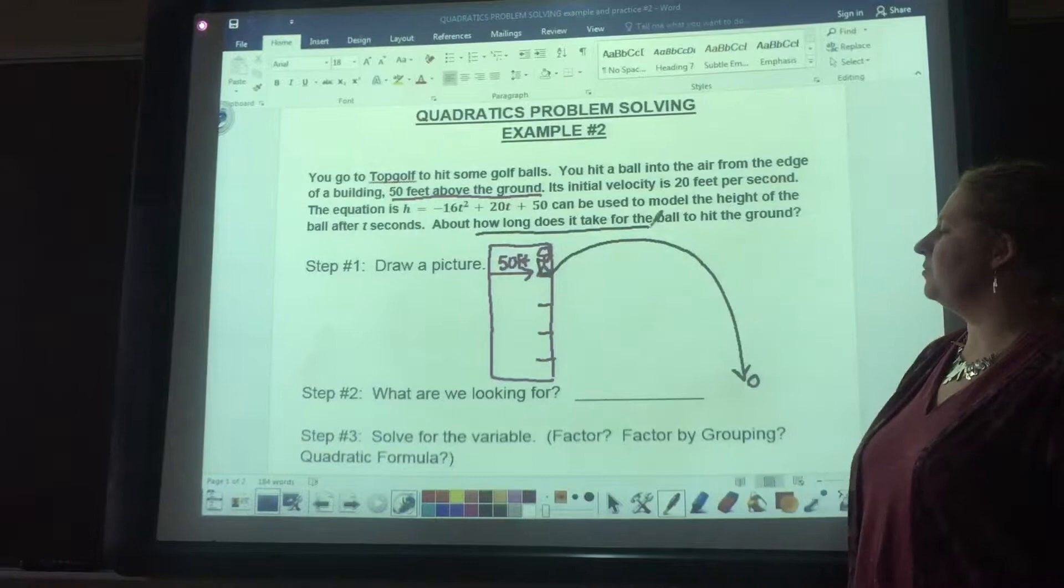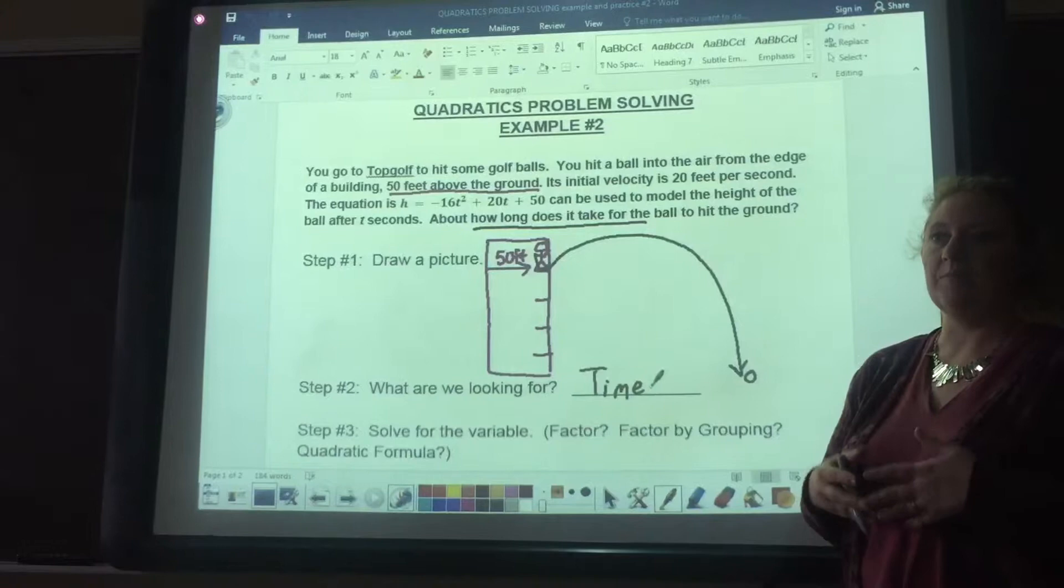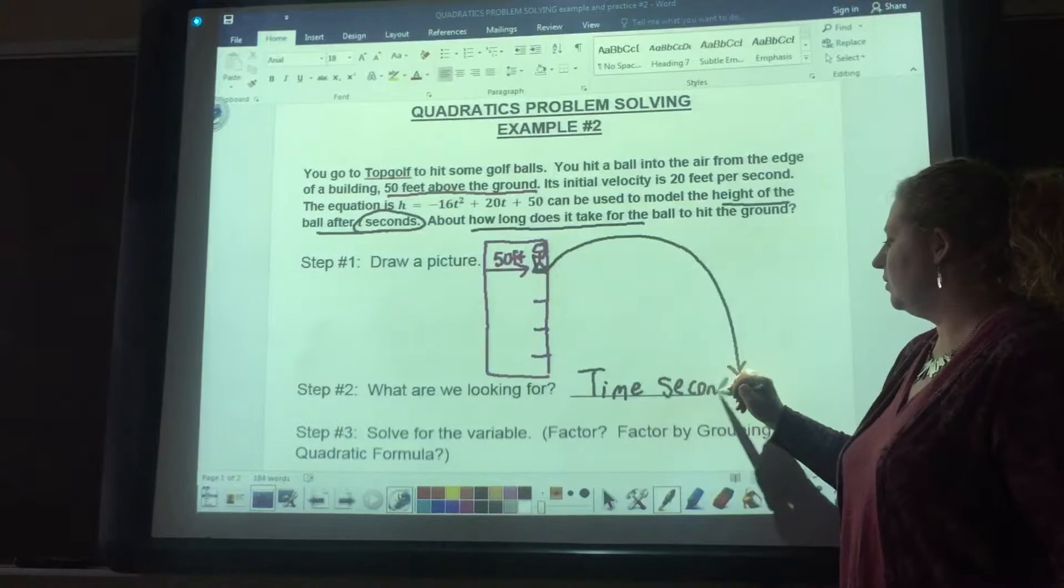For step two, we just need to determine what the question is asking for. What are we looking for? We are looking for time. Make sure you put down what type of unit. Are we talking about seconds, minutes, or hours? In this case, it says the height of the ball after t seconds. So we're talking about how many seconds the golf ball will be up in the air until it lands on the ground.